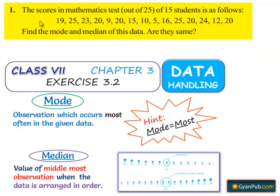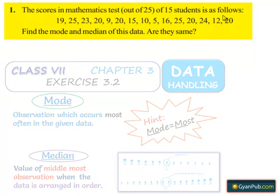Now question number one. The scores in a mathematics test of 15 students are as follows. Find the mode and median of this data. Are they same?